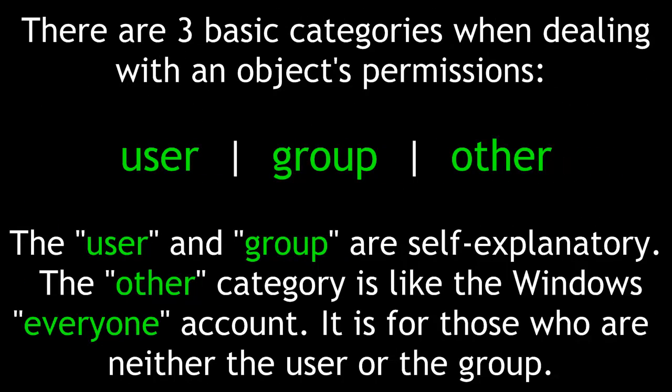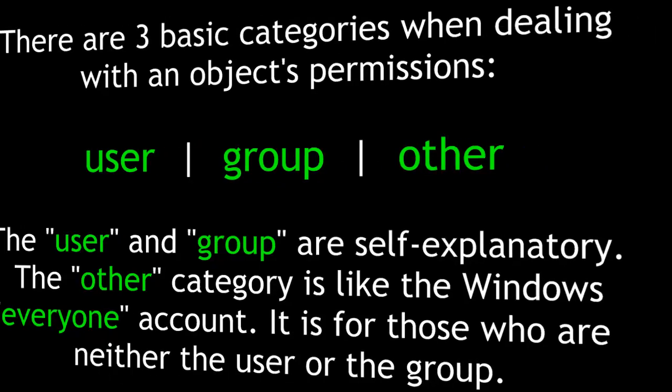There are three basic categories when dealing with an object's permissions: user, group, and other. The user and group are self-explanatory. The other category is like the Windows Everyone account — it is for those who are neither the user nor the group.